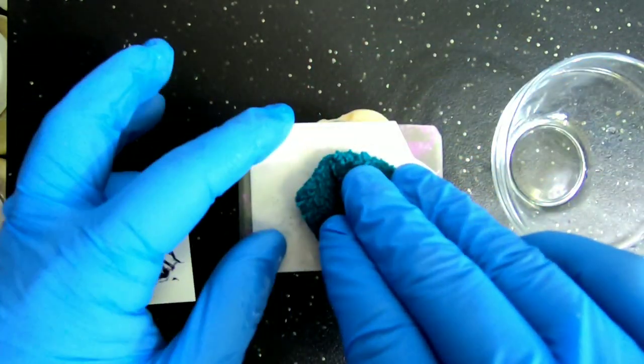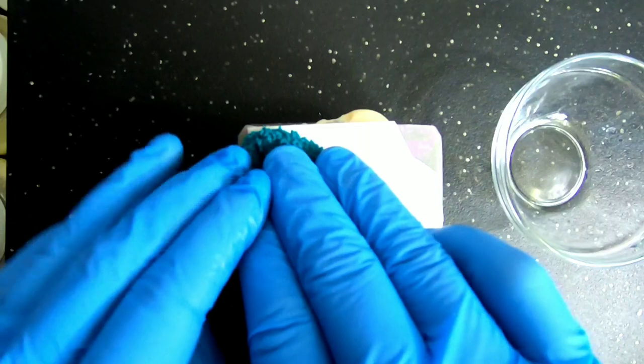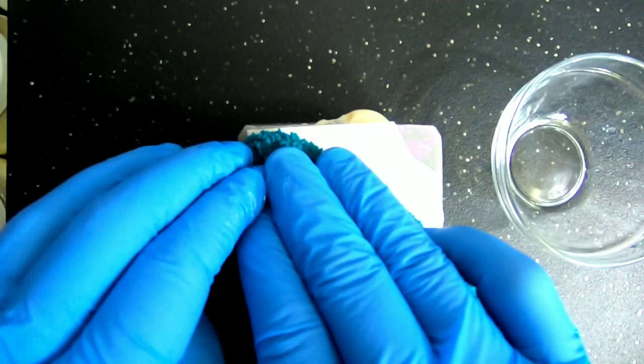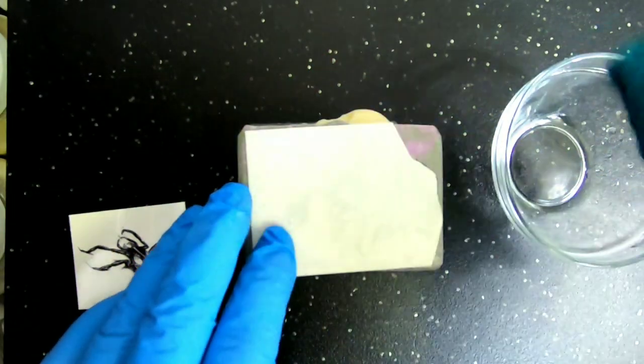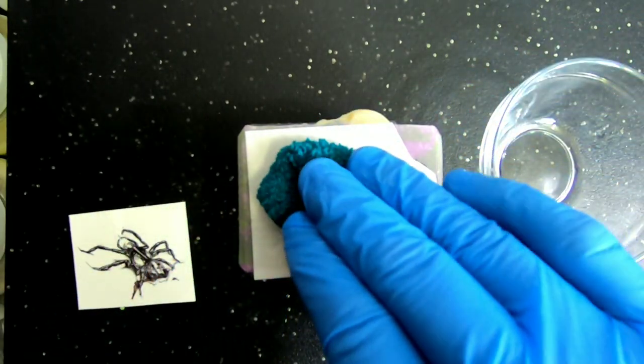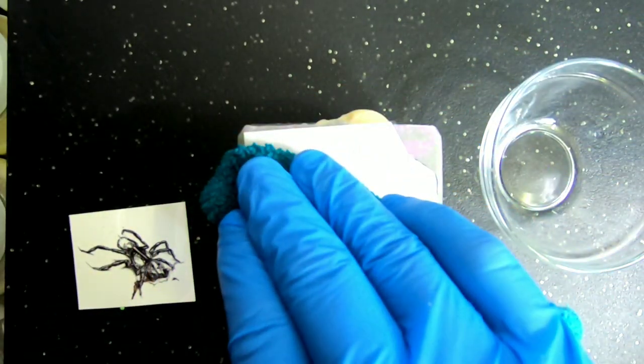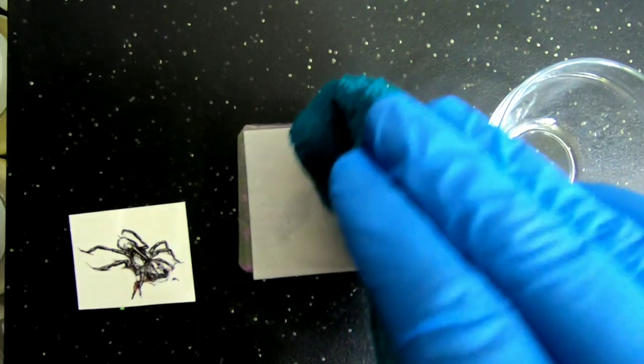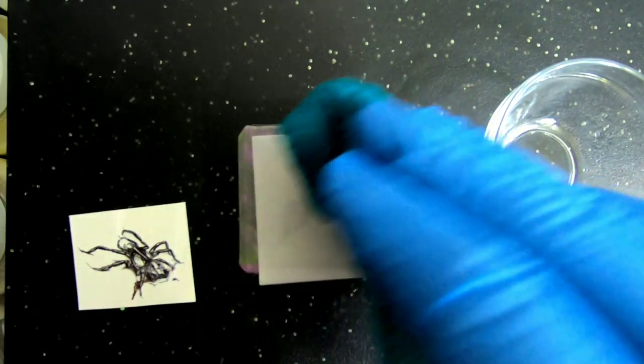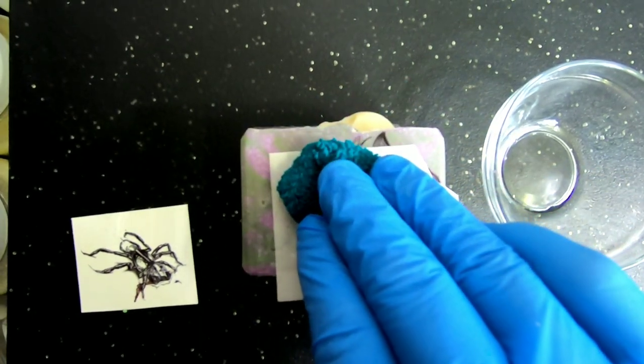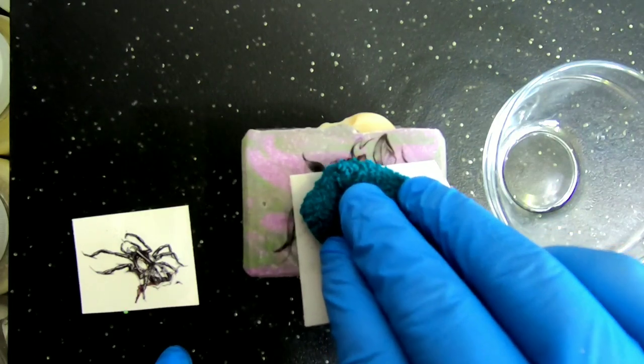But just like you would when applying it to your skin, you're going to make sure that the back of the tattoo gets fully saturated. You want to hold it still, and then as soon as the paper starts to slide like it is now, let me just gently slide it off.